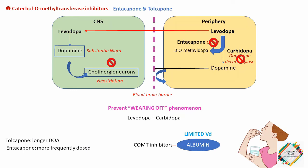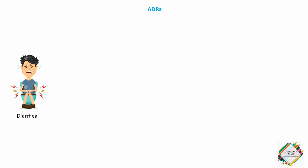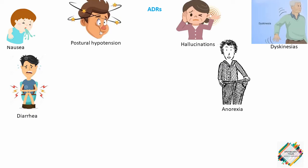Both drugs are extensively metabolized and eliminated in feces and urine. Dosage may need to be adjusted in patients with moderate or severe cirrhosis. Both drugs exhibit adverse effects observed in patients taking levodopa and carbidopa combination including diarrhea, postural hypotension, nausea, anorexia, dyskinesias, hallucinations and sleep disorders.